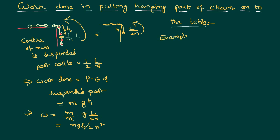If one third of the chain is hanging, not the entire chain, one third of the chain is hanging. To get it back onto the table, to pull it back, we must do some work.